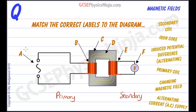Let's start off by looking at the input. What is A? Well, A is our input voltage. It has to be an alternating voltage or an alternating current.